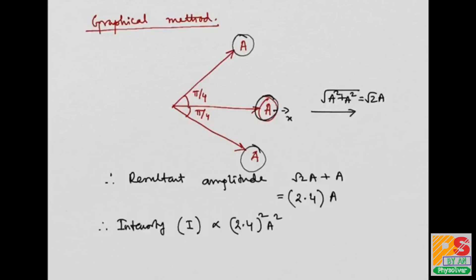We have already discussed that I₀ is proportional to A². Therefore, I can say I equals (2.4)²A², which is 5.76A². And I can put A² as I₀, so intensity of the resulting wave is 5.76I₀.